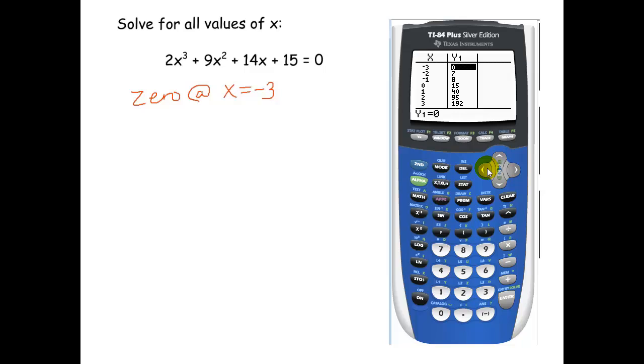I am going to use synthetic division now to help me find the other two answers. Because if we look back at the graph, I don't see two other zeros. What do you think that might mean? Well, let's use this synthetic division to figure it out.